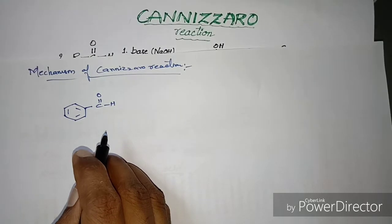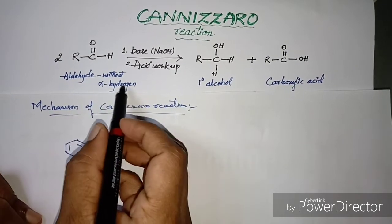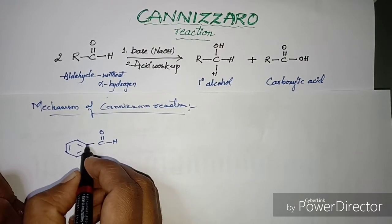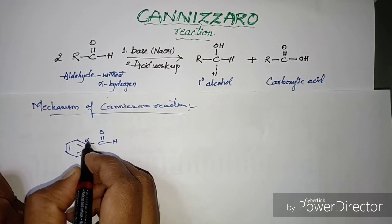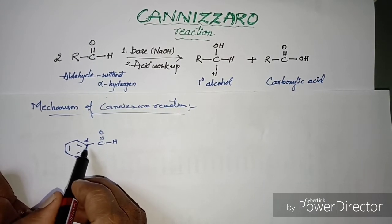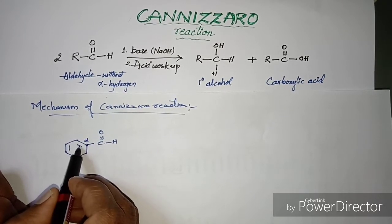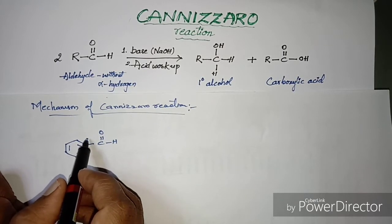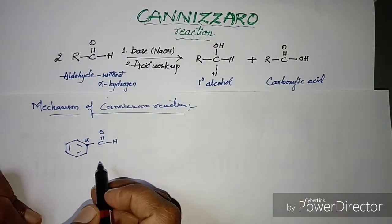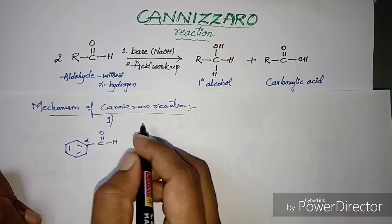As stated, the main requirement for the Cannizzaro reaction to proceed is an aldehyde without alpha hydrogen. The carbon next to the functional group is designated as the alpha carbon. Carbon has a valency of four — here the four valences are satisfied by connections to adjacent carbons and the pi bond. This alpha carbon has no hydrogen, so this species can clearly undergo the Cannizzaro reaction.